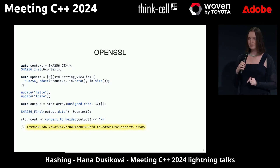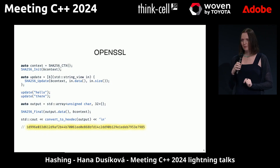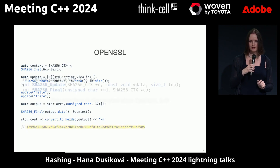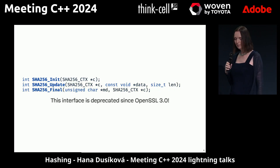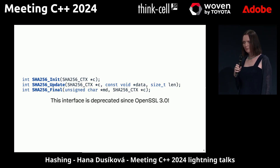But OpenSSL3 makes this interface deprecated and you need to allocate for calculating hashes. Allocated for hashes. You have these three functions and they are deprecated. It's terrible.